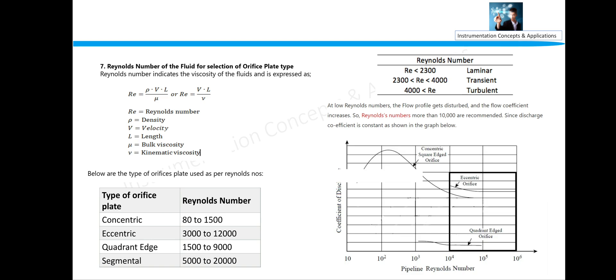Depending on the Reynolds number, we can define that if the Reynolds number is between 10 to 1500, then concentric orifice type should be used; between 300 to 12,000, eccentric; and 15 to 900, quadrant; and after that, segmental type of orifice can be used. And Reynolds number relation with laminar and turbulent flow is mentioned on the right side: if it is less than 2300, that is laminar flow; between 2300 to 4000, transient; and more than 4000, that is turbulent. This mark is not correct; actually it should be like this.